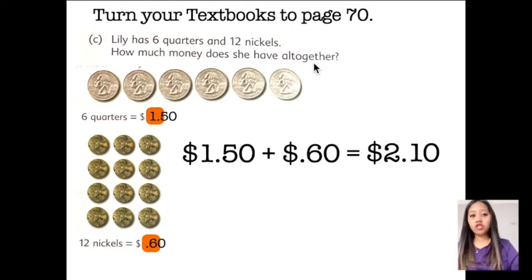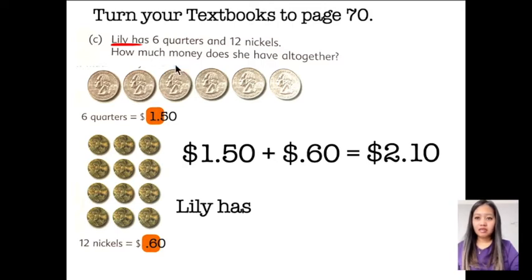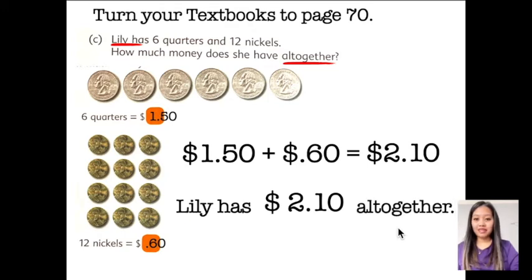So, 1 dollar and 50 cents plus 60 cents is equivalent to 2 dollar and 10 cents. So, what we should say is, we should answer in a sentence. Lily has... Because, as you can see here, it says Lily has... 2 dollars and 10 cents, which is our answer. And then, we can just write it all together. Lily has 2 dollars and 10 cents all together. Yes. There you go. So, that's the answer to this word problem. I hope this helped you understand solving problems in relation to money.